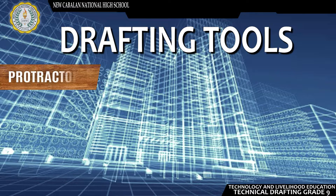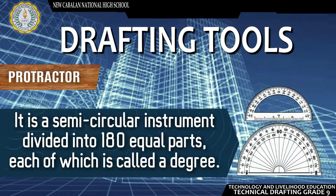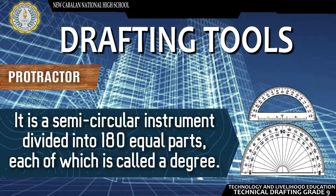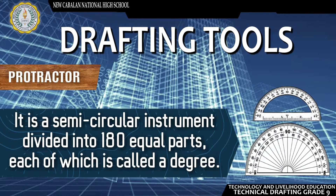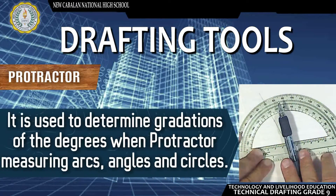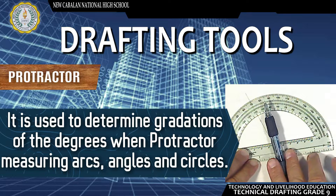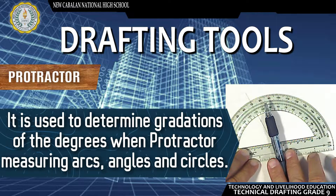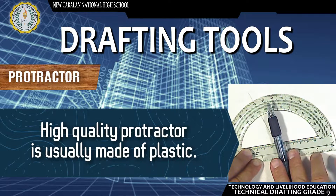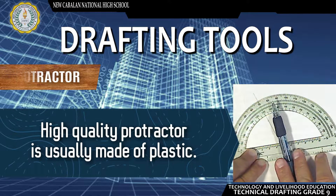Protractor — It is a semi-circular instrument divided into 180 equal parts, each of which is called a degree. It is used to determine gradations of degrees when measuring arcs, angles, and circles. High quality protractors are usually made of plastic.